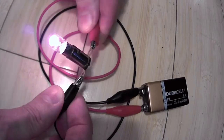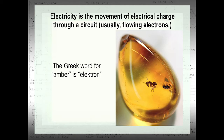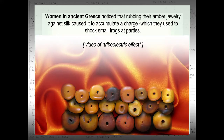I'll do a little demo here, showing electricity at work by hooking up a circuit. Humans have known about electrical charge for millennia. The Greek word for the material amber is electron, and that's the word that electricity is derived from. Apparently women in ancient Greece noticed that when rubbing amber against their silk clothing, it caused it to accumulate a charge, which they used to shock small frogs as entertainment at parties. I heard about this at a lecture at MIT, though I'm not sure exactly what literature records the Greek women shocking frogs.